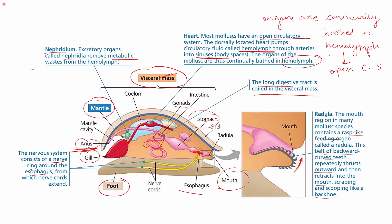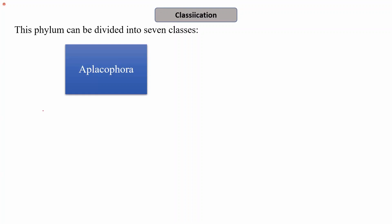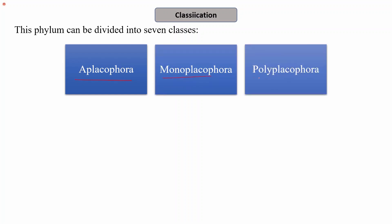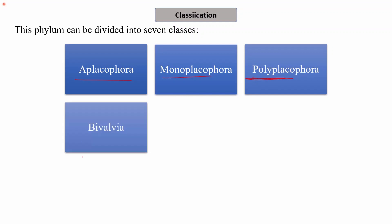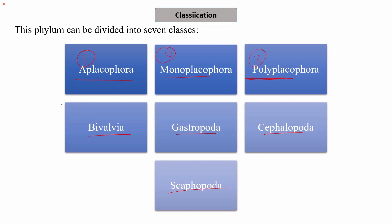Mollusks can be classified into seven different classes: Aplacophora, Monoplacophora, Polyplacophora, Bivalvia, Gastropoda, Cephalopoda, and Scaphopoda. These classes are distinguished by differences in their anatomy and characteristics. We will now learn about each class one by one.